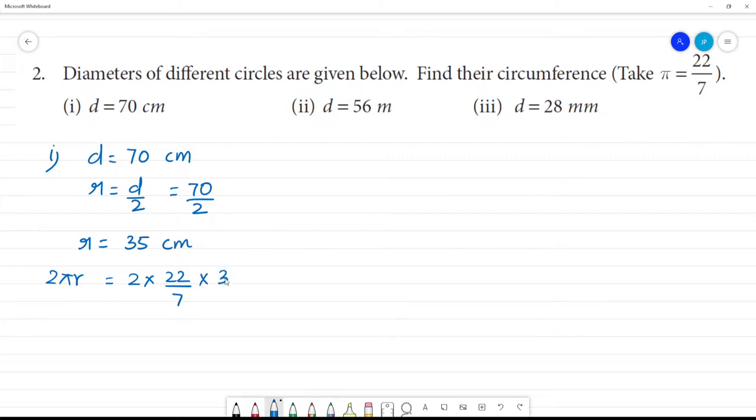So the value is 35. Now, we have to cancel. 1, 7 is 7. 5, 7 is 35. Now, we have 5 into 2 is 10. 10 into 22 is 220. 220 cm. Clear? First one is 220 cm. Second one.